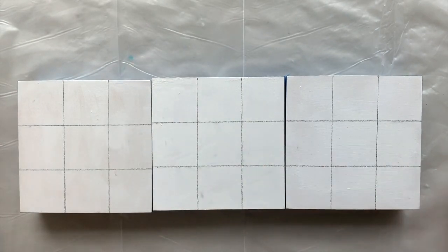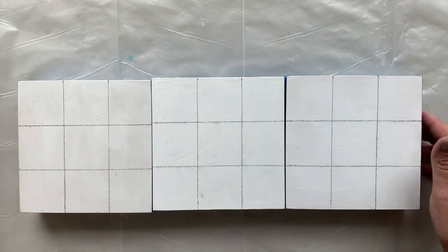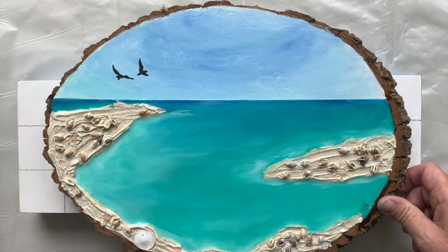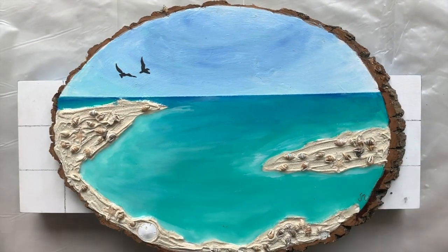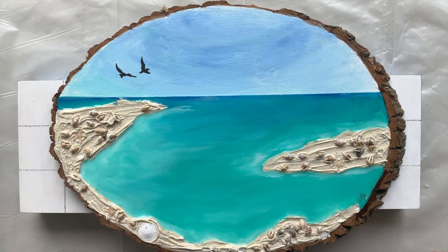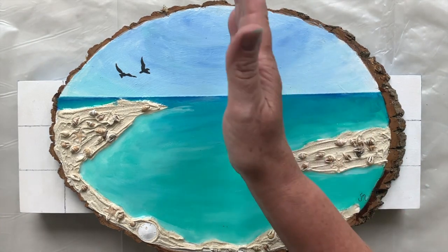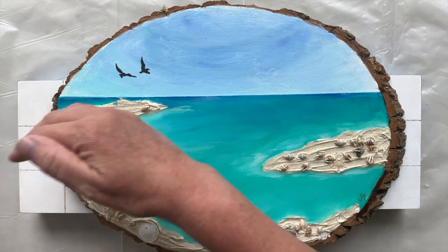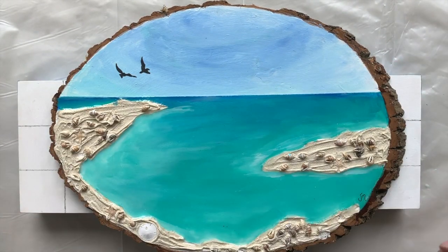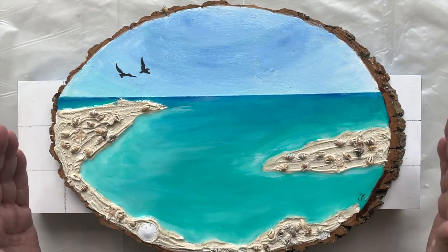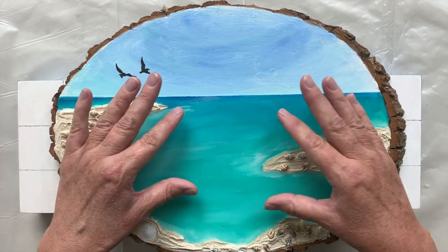You may be asking, it looks like tic-tac-toe or noughts and crosses as they call it in England. But what I want to show you is the rule of thirds. Basically, you divide a painting or a composition before you've even started it into thirds vertically and thirds horizontally.